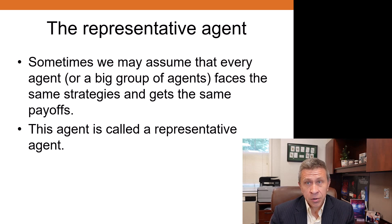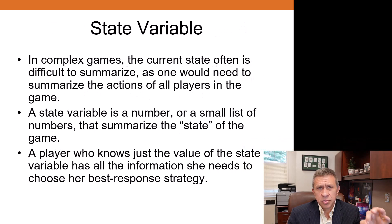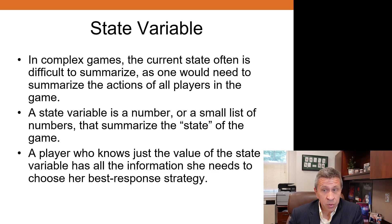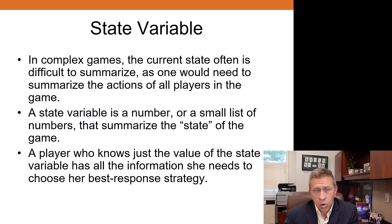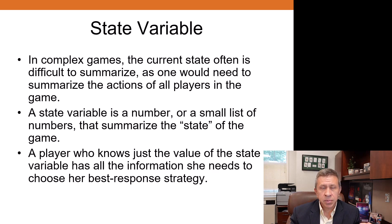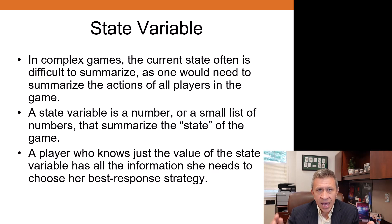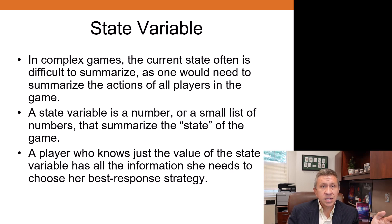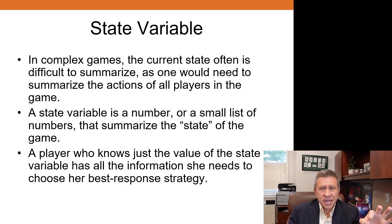So representative agent — that's the first simplification. The second simplification is using a state variable. The state variable is how we describe the current state of the world or of the game. How do you summarize all of the actions of all of the players? For two-player and three-player games, especially sequential ones, you have to think through what is the current state of the world. Here we have one state variable that summarizes exactly what is happening in the game. A player who knows the value of the state variable has every piece of information needed to come up with the best response strategy. These two concepts become clearer with an example, so let's go do that now.